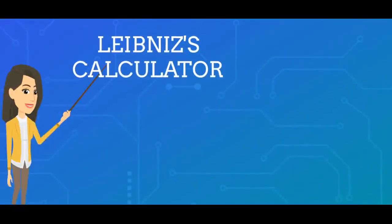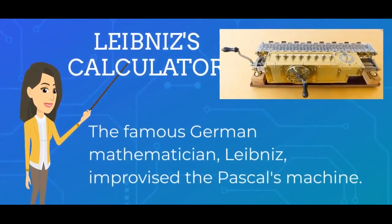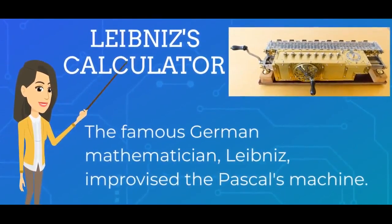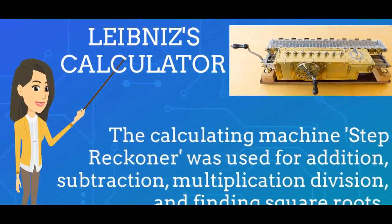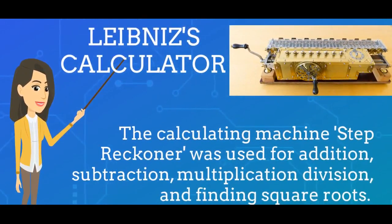The famous German mathematician Leibniz improvised Pascal's machine. The calculating machine's Step-Reckoner was used for addition, subtraction, multiplication, division and finding square roots.